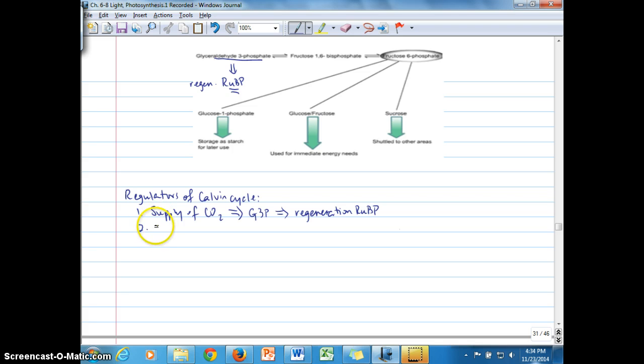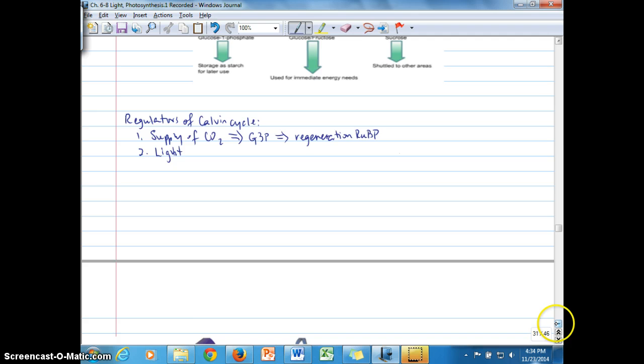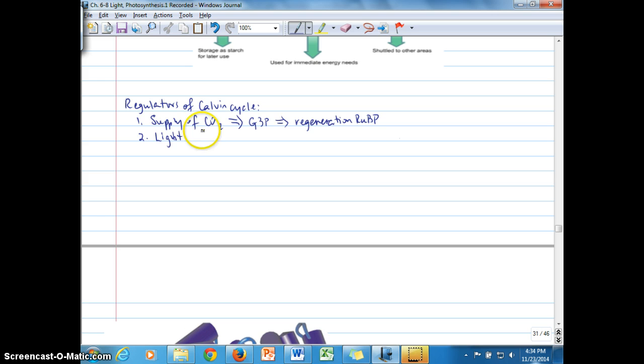We're going to spend more time now discussing the regulation of the Calvin cycle by light. Even though some people refer to it as the light-independent reactions, it indeed relies on and is regulated by light. The first aspect of the regulation by light we're going to look at is how light reactions cause or produce a pH gradient, which is high pH or ideally around 8 in the stroma. That leads to ideal activation of these stromal enzymes, of Calvin cycle enzymes, versus a pH in the lumen of about 5. Remember the pH drops as the hydrogen ion concentration increases.